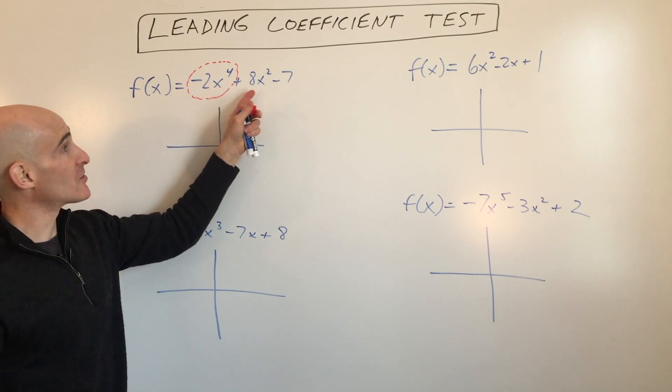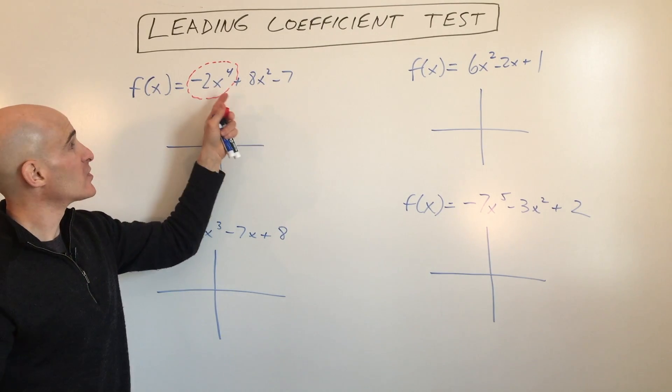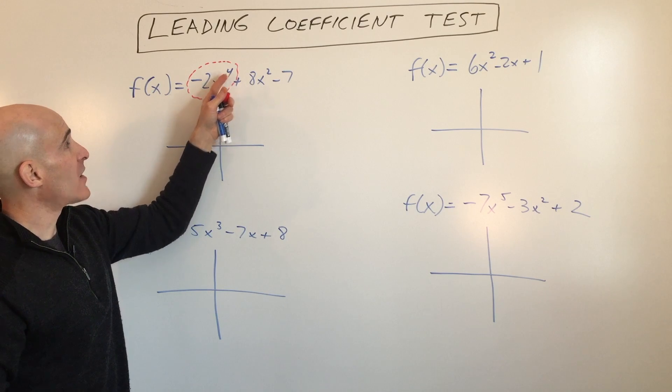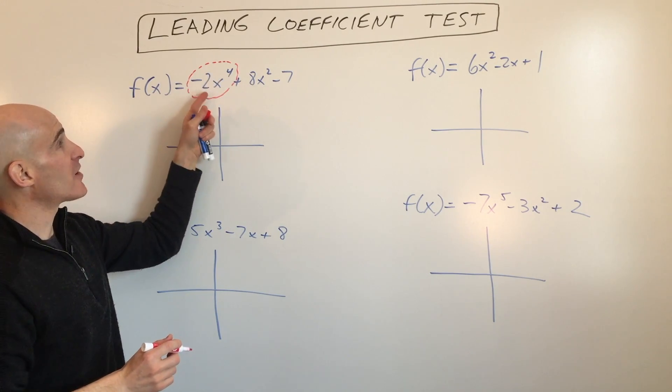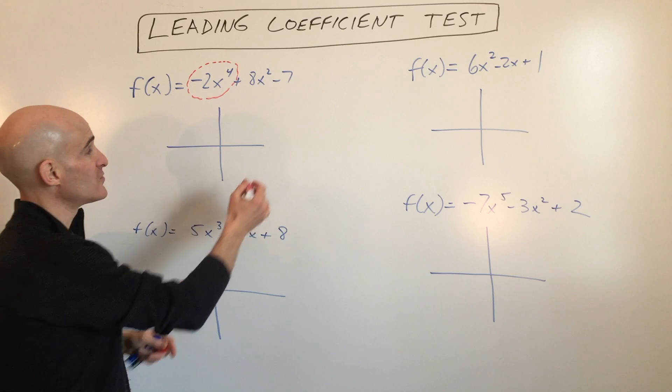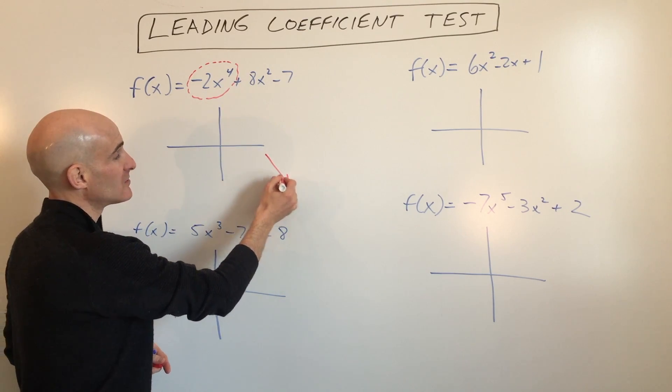It's going to grow faster than these two terms, which means that as x gets larger and larger, this is going to become a larger and larger negative number, which means it's going down to the right.